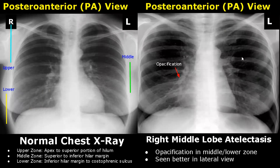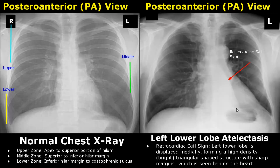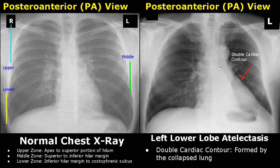Right middle lobe atelectasis is seen better in a lateral view; in a PA view it just appears as an opacification in the middle or lower zone, which is a non-specific feature. In left lower lobe atelectasis, the retrocardiac sail sign is a distinct feature — the left lower lobe is displaced medially, forming a triangle-shaped, bright structure with sharp margins behind the heart. Double cardiac contour is another feature, formed by the collapsed lung, where two cardiac contours are visible, making it appear as if the heart has two outlines.